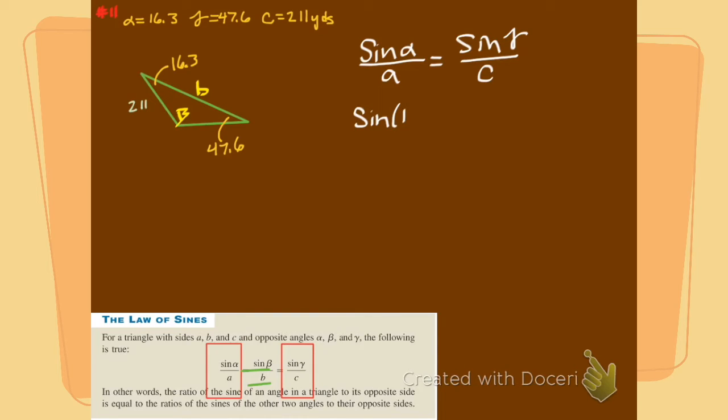So my alpha is 16.3 divided by, they didn't give me my A. We're looking for A. If you see A, tell them we're looking for them. And then we put our gamma in where gamma go. And we put our C in where C go. And then we go and do some algebra.